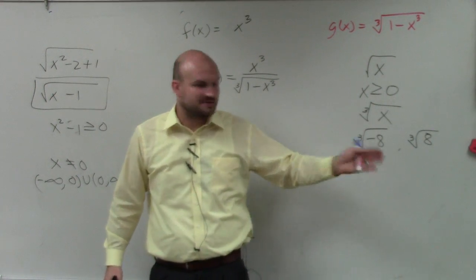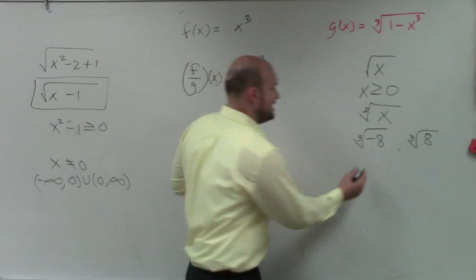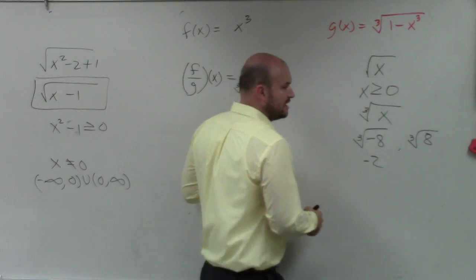Well, negative 2 times negative 2 times negative 2. Positive 2 times positive 2 times positive 2. So the cube root of a negative number is just a negative solution.